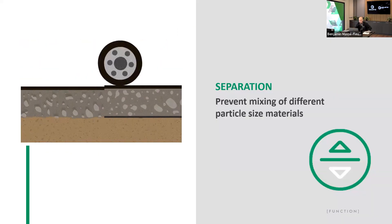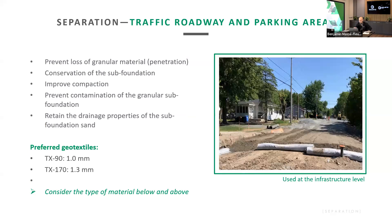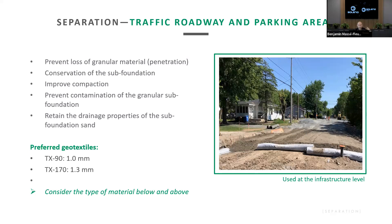Separation simply prevents the mixing of different materials. These products are mainly used for roadways — we would propose the TX90 or TX70. The goal is to prevent loss of granular material penetration, conserve the sub-foundation, improve compaction, and retain drainage. It's important to reproduce the road crown — the slope from centerline toward the ditch or curb — at the sub-foundation level as well.